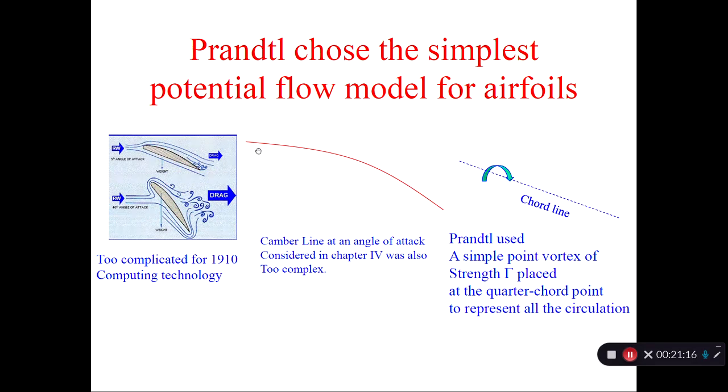Prandtl said in 1917, this is too much detail. I cannot distribute things all along the x-axis. I'm just going to put one lumped vortex right at the quarter chord line. So he called, that's the vortex. This is called a bound vortex because it's bound over the wing. So this vortex strength is going to be the same as the integrated vortex along this camber line from our 2D theory.